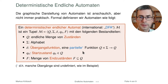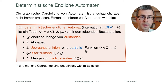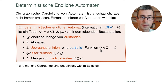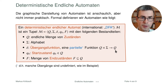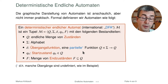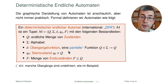Die Übergangsfunktion kann man mathematisch als eine partielle Funktion fassen, also eine Funktion, die nicht überall definiert ist. Sie bildet von einem Paar — einem Zustand und einem Zeichen — auf einen anderen Zustand ab. Die Idee ist: man befindet sich in einem Zustand, liest ein Zeichen, und entscheidet ausgehend von diesen beiden Dingen, in welchen Zustand man gelangt. Sie ist partiell, das heißt, es gibt Fälle, in denen ein Übergang nicht existiert — wie wir gerade gesehen haben.